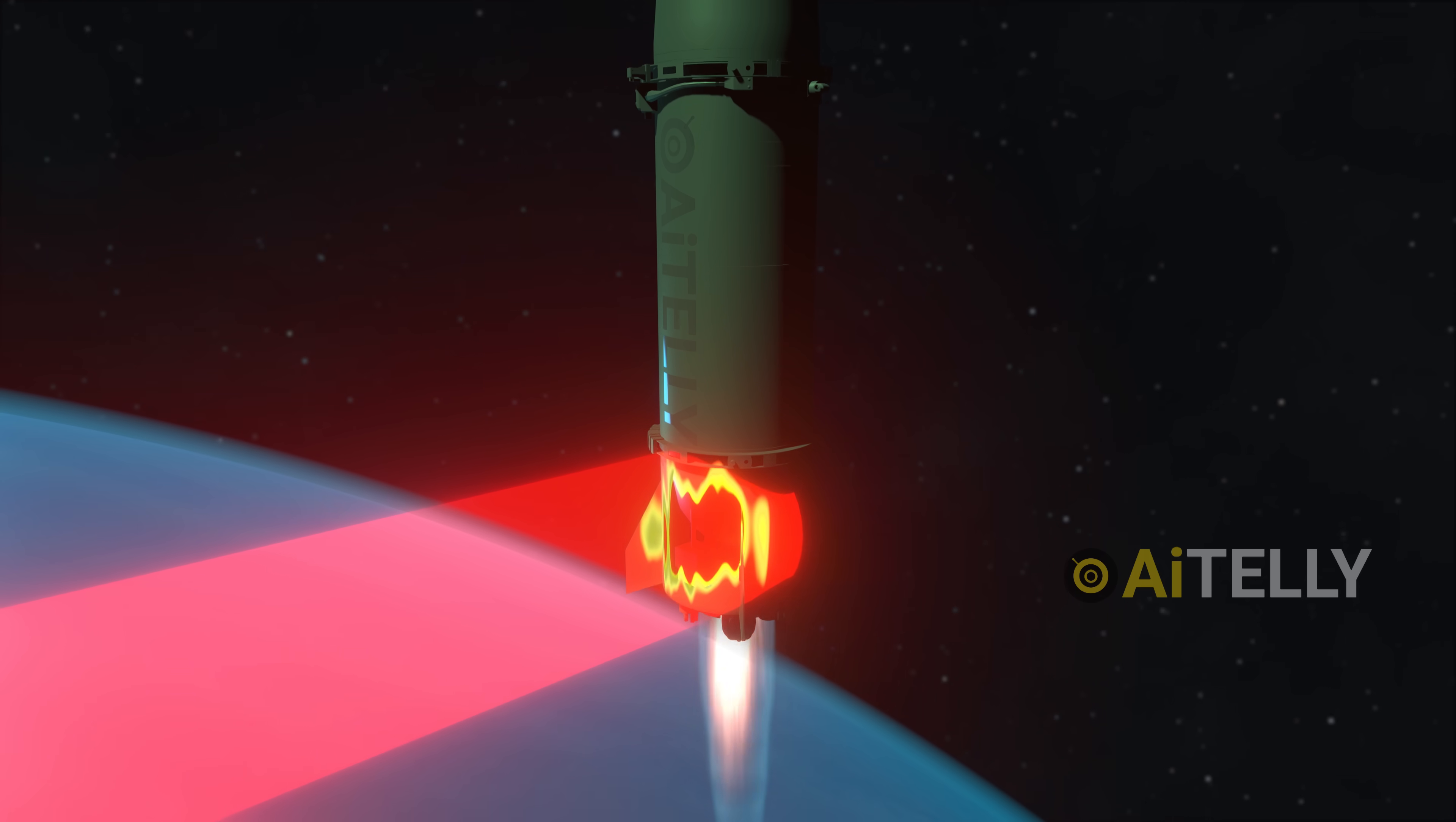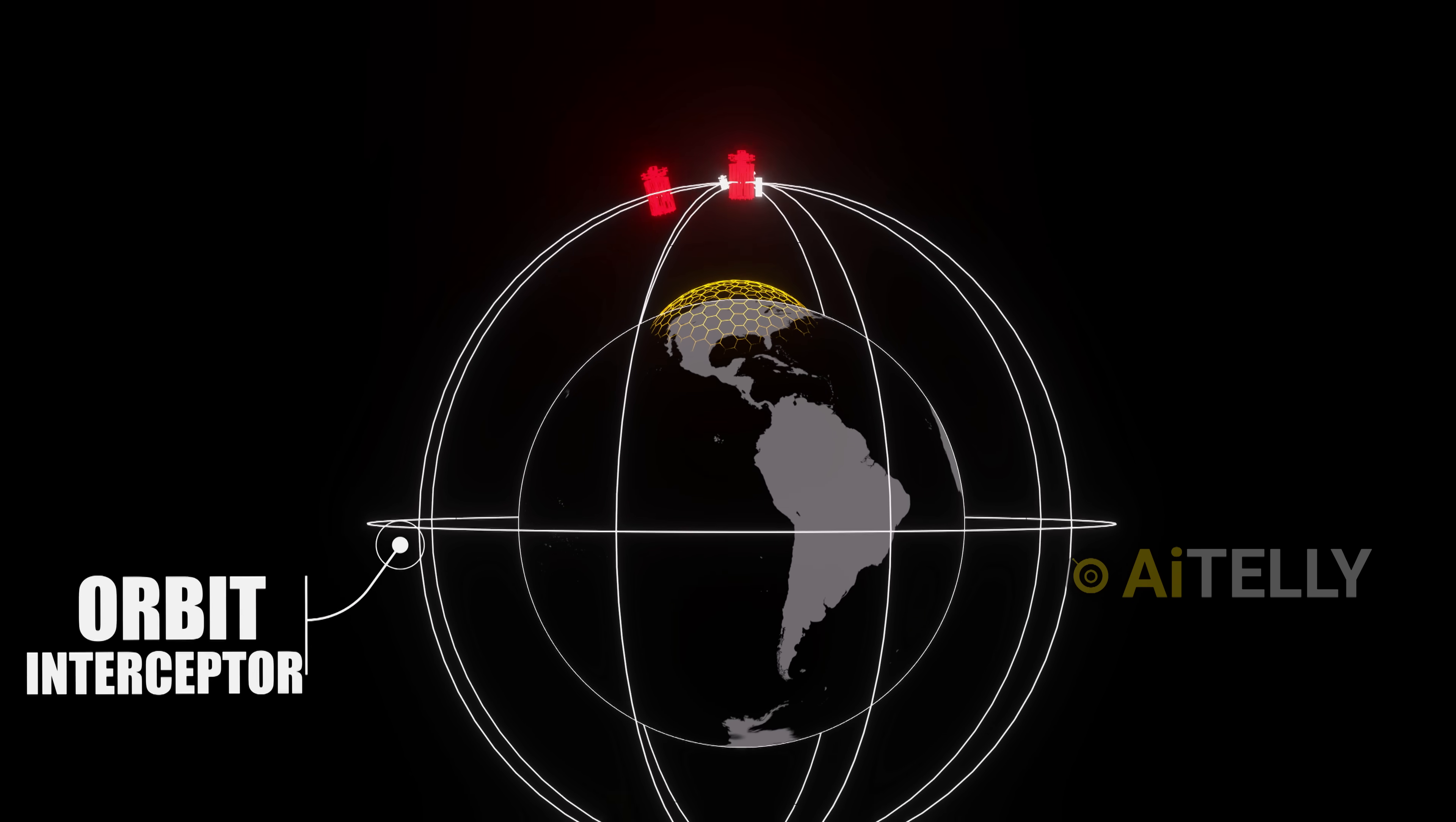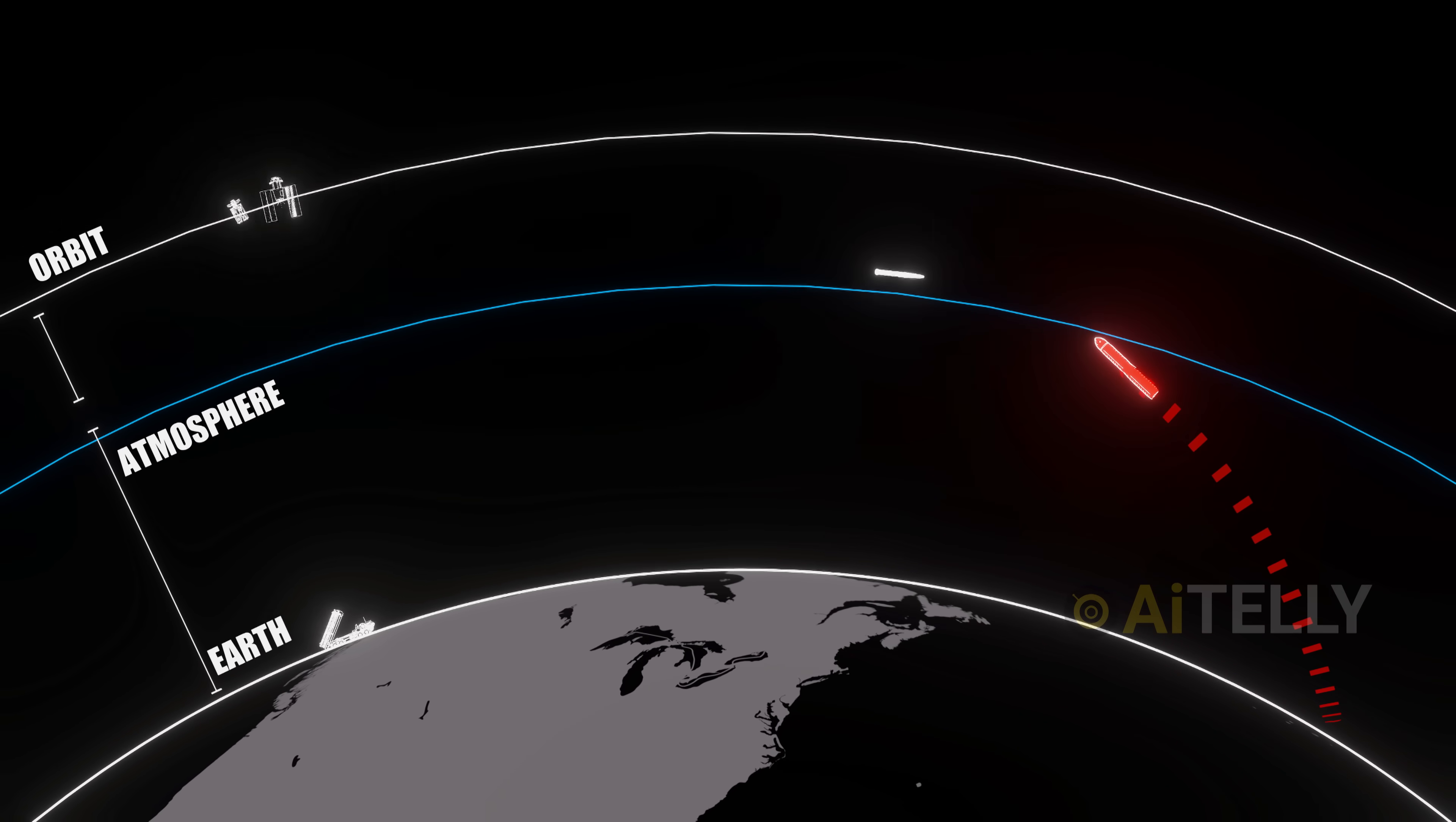Instead of rods, we're talking about space-based lasers, powerful beams designed to shoot down enemy hypersonic missiles. Another strategy is satellites orbiting close to Earth can react to threats much faster than ground-based anti-ballistic missile systems. That speed could mean the difference between a successful defense and total devastation.